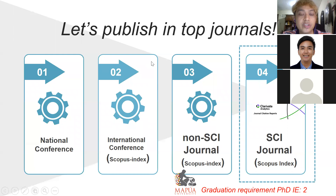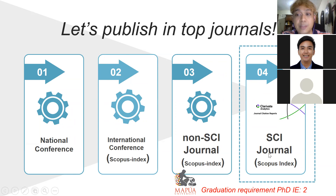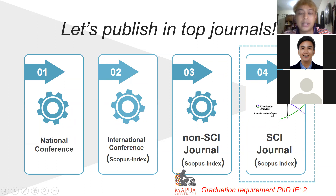I know some of you just want to finish this class and submit a study to an international conference. But I have proven that some of you are already at the SCI journal level. There's also the Q-journal level with a star. For example, Ralph is there — if you enroll in a PhD program and publish one more, you could potentially be granted a doctoral degree.